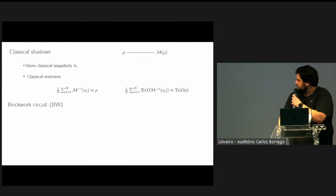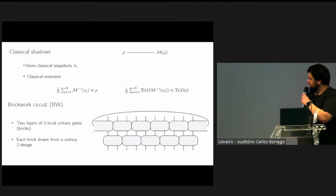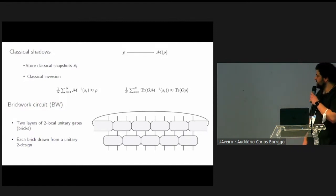In the second part, we will consider a brickwork circuit, but this time we will restrict ourselves to only two layers. As before, they are made up of two-local unitary gates where each brick is drawn from the Clifford group in practice, or more generally from a unitary 2-design.